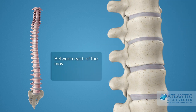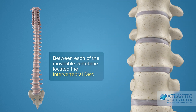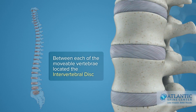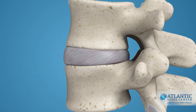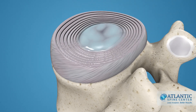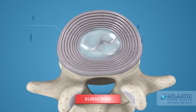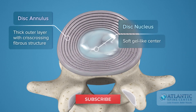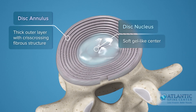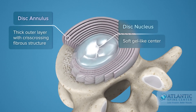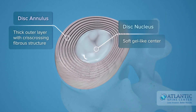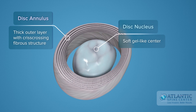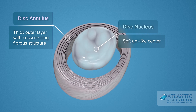Between each of the movable vertebrae is located the intervertebral disc. Intervertebral discs consist of a thick outer layer with a criss-crossing fibrous structure, the annulus, that surrounds the soft, gel-like center, the nucleus.